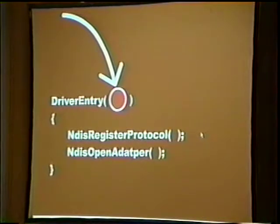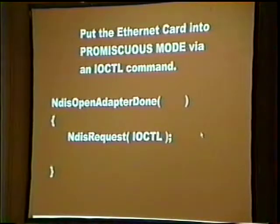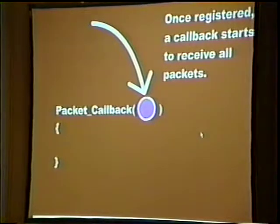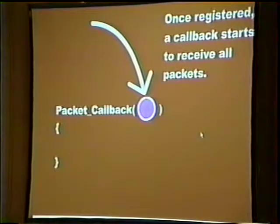To do this in the rootkit: we call NdisRegisterProtocol to bind a protocol, then NdisOpenAdapter to open the underlying adapter, then an NdisRequest ioctl that puts it in promiscuous mode so we can sniff everything. At that point we begin receiving packets in our packet callback function. One thing you could think about: you could look at a particular offset in any packet and see if it's set to a certain hexadecimal value — like 0x29A — and if it is, check another offset. If that matches — say 0x400 — that's a secret signal to the rootkit to do something. That's a covert channel that would be extremely difficult to detect with a sniffer or intrusion detection system.